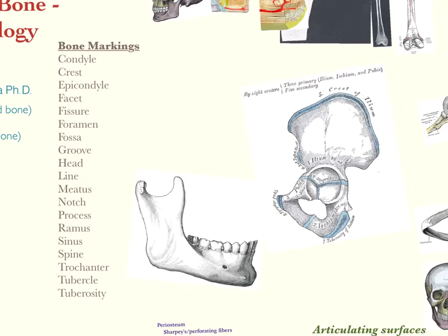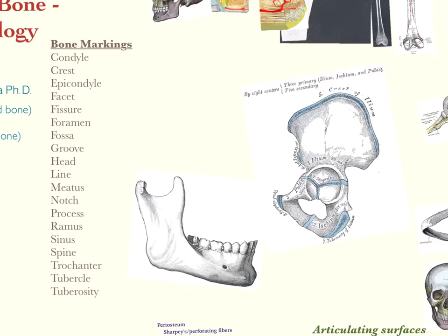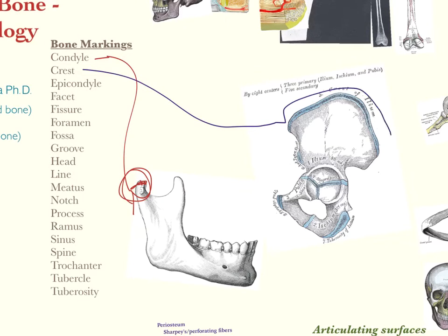Bone markings tell us more about limits, articulations, and help describe specific features on individual bones. First is a condyle — a rounded projection of bone that specifically articulates with another bit of bone, having a nice rounded surface on that outcropping. In contrast, a crest — such as the iliac crest — is a very narrow outcropping like a ridge of bone, and it's usually very prominent, really sticking out.